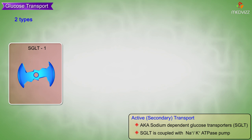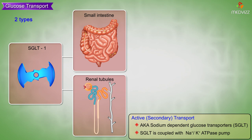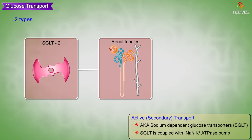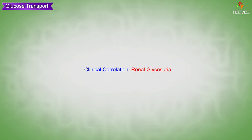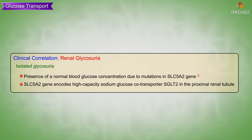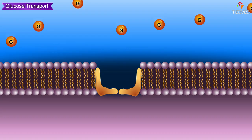SGLT is of two types. SGLT1 is present in the small intestine and renal tubule, and helps in absorption of glucose and galactose. SGLT2 is present in renal tubules and helps in absorption of glucose. Clinical correlation: renal glycosuria is isolated glycosuria in the presence of normal blood glucose concentration, due to mutations in the SLC5A2 gene that encodes the high-capacity sodium-glucose co-transporter SGLT2 in the proximal renal tubule.